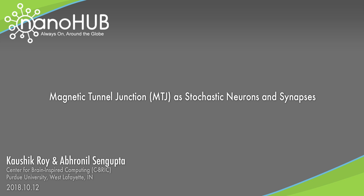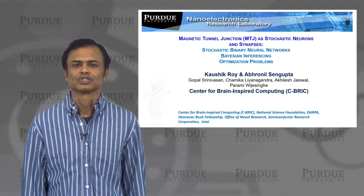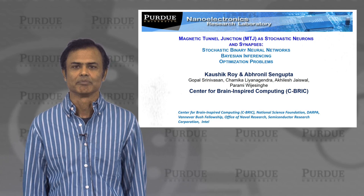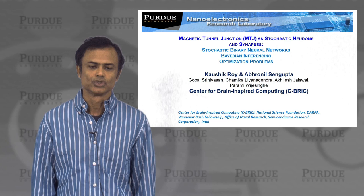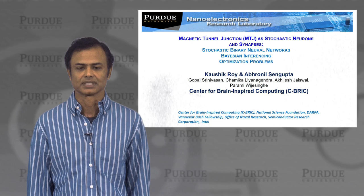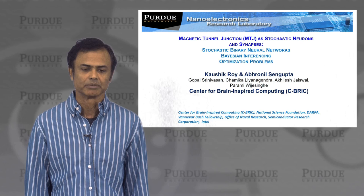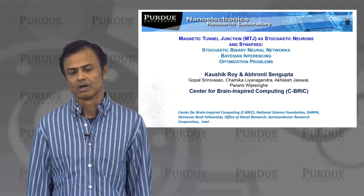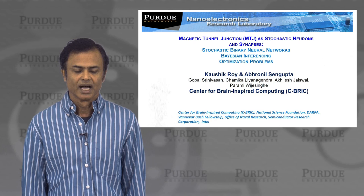Welcome to this short course on stochastic computing. We're going to talk today about magnetic tunnel junctions as a stochastic device that's potentially useful in doing computations like stochastic neural networks for Bayesian inferencing, and in optimization problems where one can potentially get stuck in a local minima, and such stochasticity can take you out of the local minima into a region where it can give you a good optimized solution.